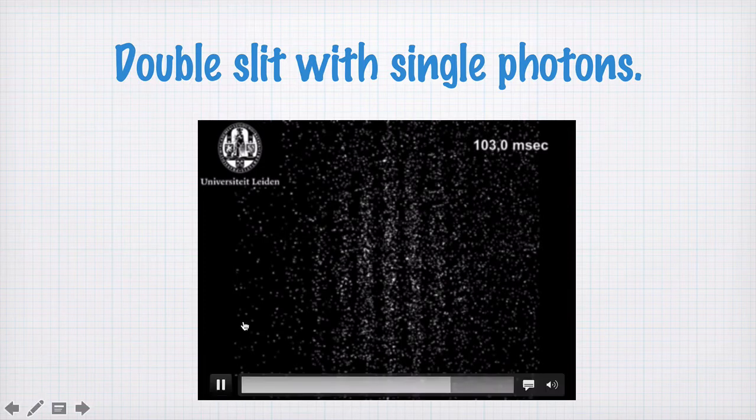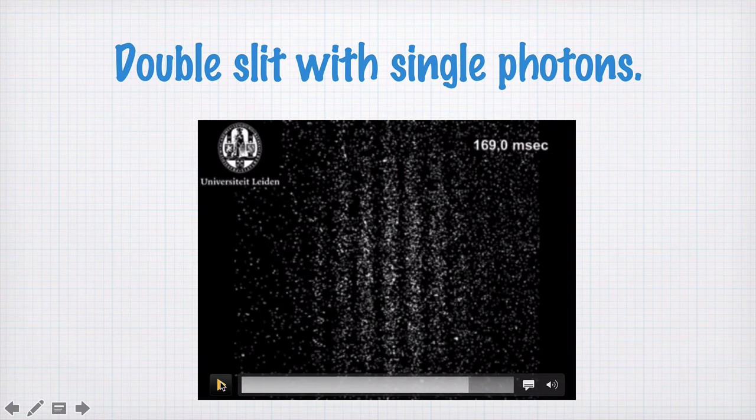And so what we see here over time is this pattern building up where we see some places where it's more likely for a photon to arrive and other places where it's less likely for a photon to arrive. We see, in other words, bright and dark fringes, which is the classic double slit interference pattern.